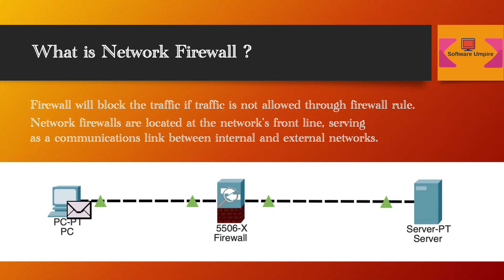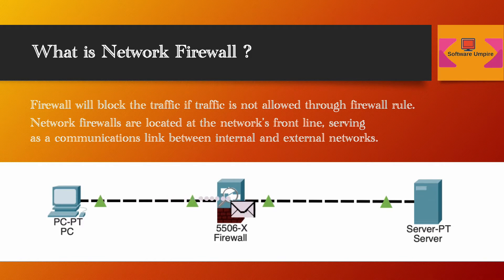The firewall will block traffic if it is not allowed through the firewall rule. In this example, ICMP traffic is not allowed through the firewall policy, so whenever PC1 tries to ping the server IP, the traffic will get blocked by the firewall.